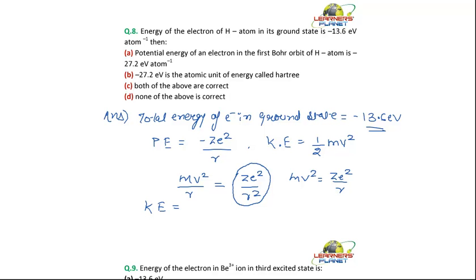Therefore, the kinetic energy equals half of ZE squared upon R. And we can say that the potential energy is equal to 2 multiplied by the kinetic energy.